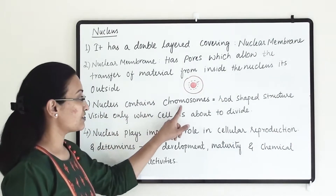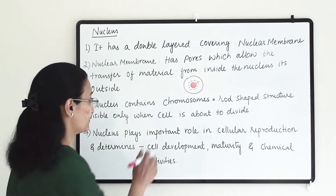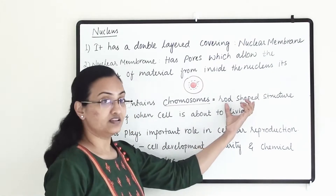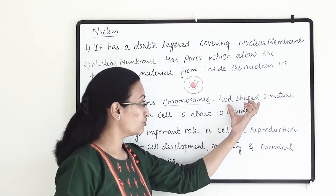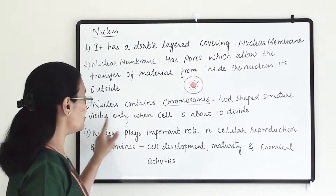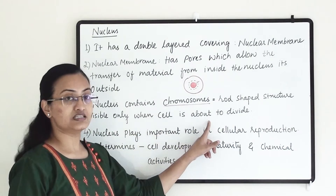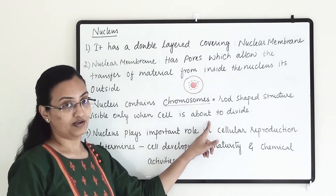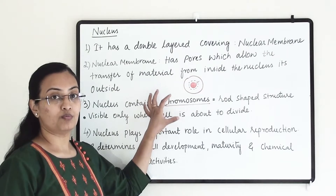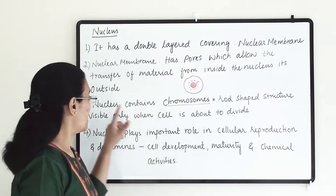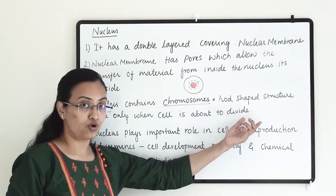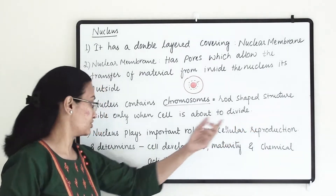Nucleus contains chromosomes. These chromosomes have a rod-shaped structure and they are visible only when the cell is about to divide. We will see more information about chromosomes after this.